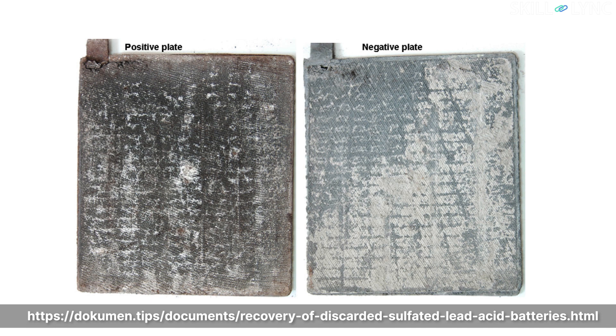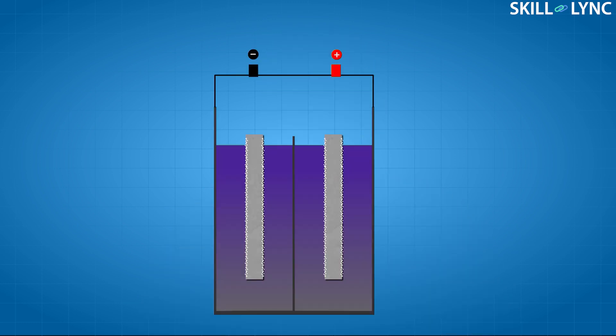This sulfate formation is reversed when the battery is charged again. But when the battery is kept in the discharged state for a very long period of time, the lead sulfate crystals deposited on the electrodes undergo a change in their crystal lattice — the amorphous lead sulfate changes into stable crystalline lead sulfate. This crystal formation impedes recharging of the battery.